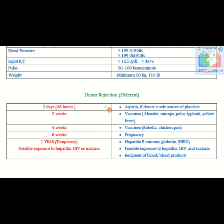Donor rejection occurs when a donor is not suitable for blood donation. There are two types: temporary and permanent. For temporary rejection, we reject a donor for two days or 48 hours if the donor has taken aspirin, particularly if they are a sole source for platelets.